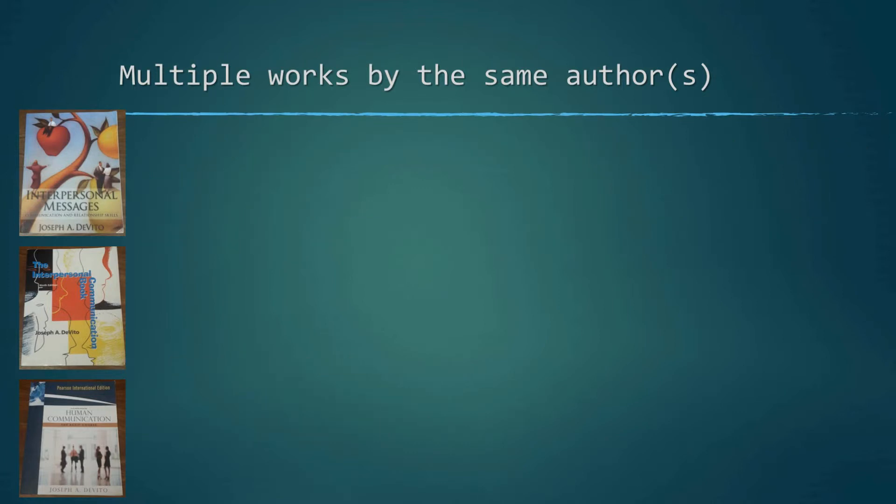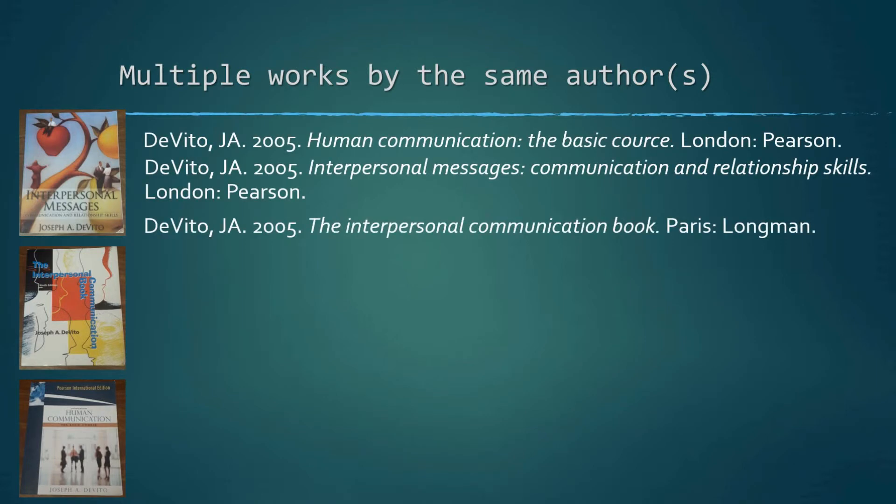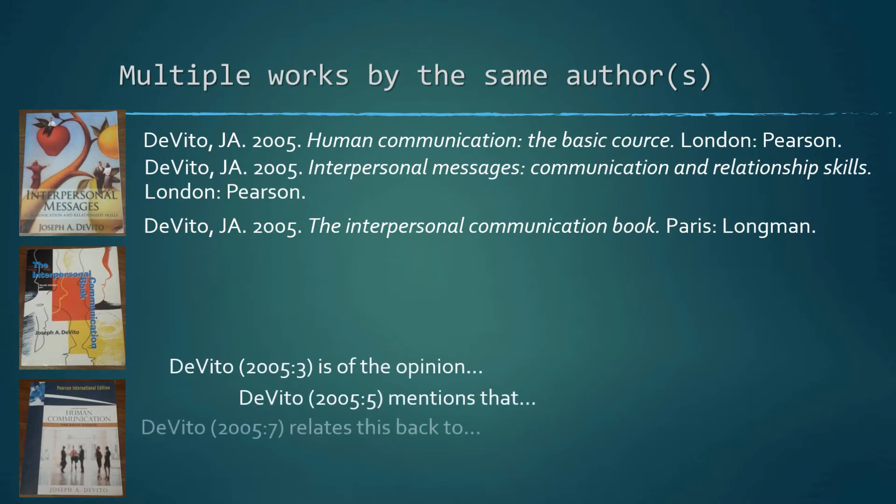The problem, however, comes in when the same author publishes multiple works in the same year. Let's say, for example, that all of these books were published in 2005. It would create a lot of confusion for your readers, as they would not be able to trace a specific reference in the text of your work to a specific source in the bibliography, as there's more than one DeVito from 2005.